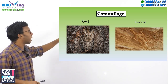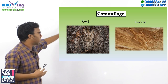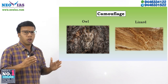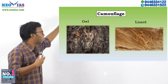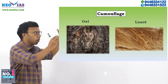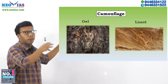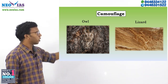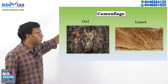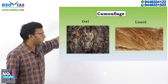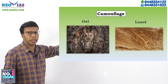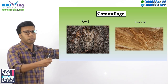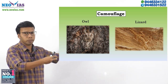This owl has a color similar to the tree, which is its background — that is camouflage. Because the owl's color matches the tree, no one can easily find it. The second example is a lizard: the background soil has the same color as the lizard, making it harder to find. Both the owl and the lizard are just matching to their background.